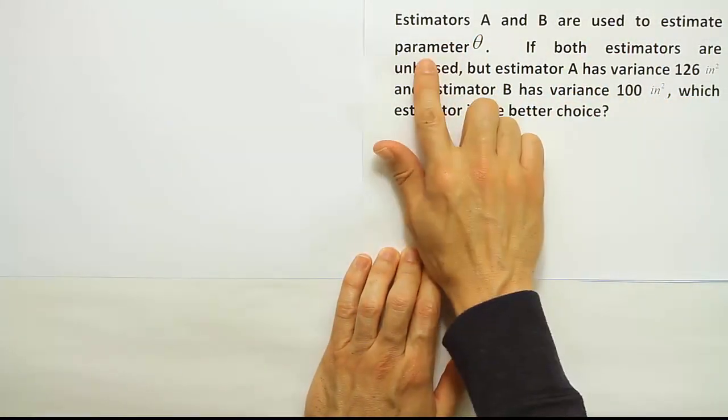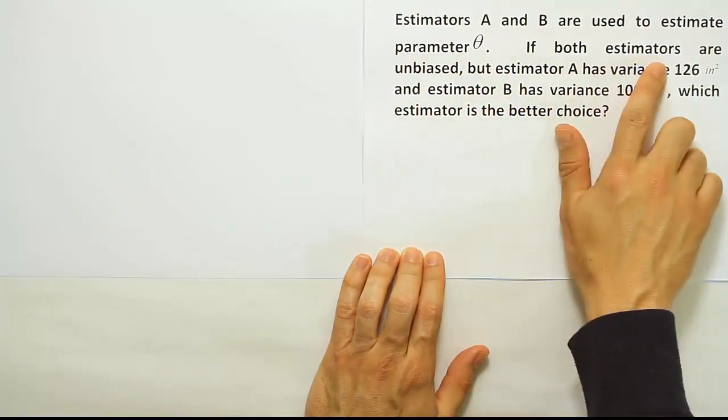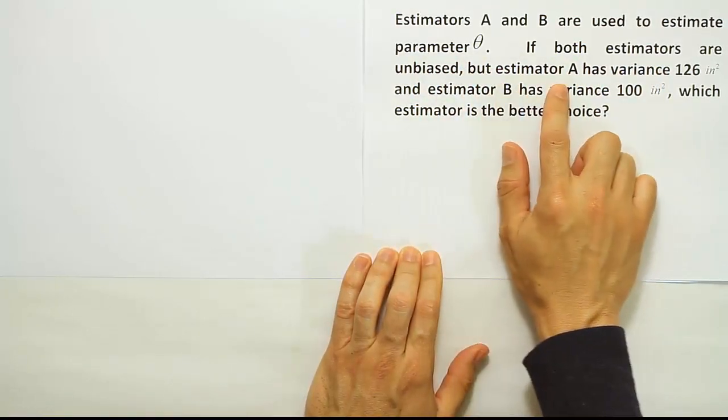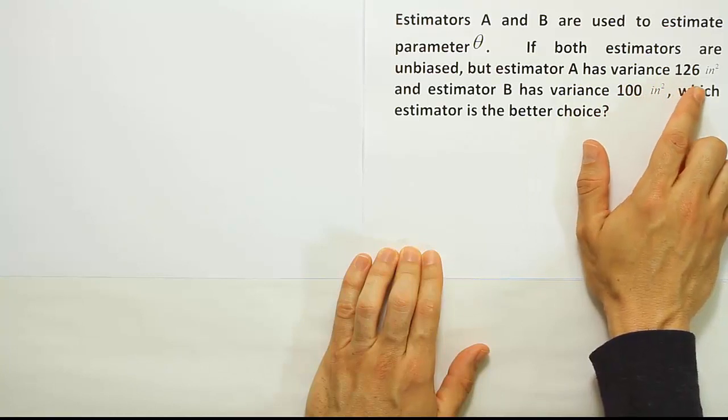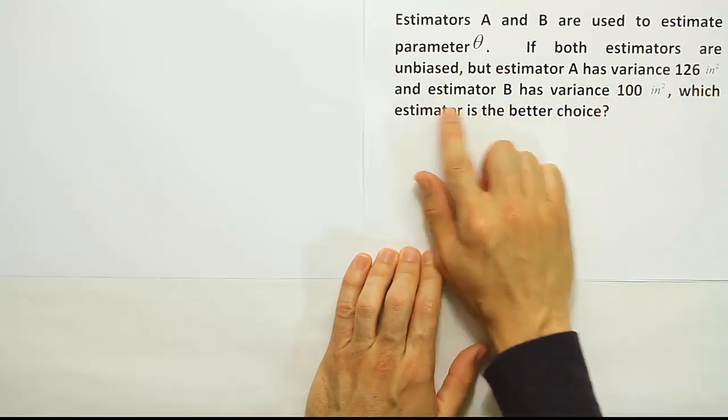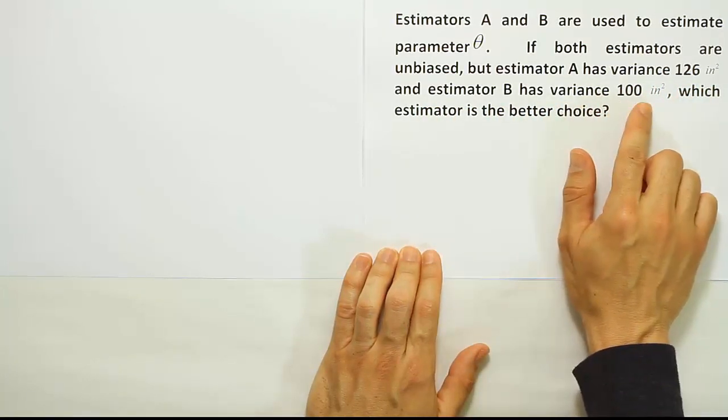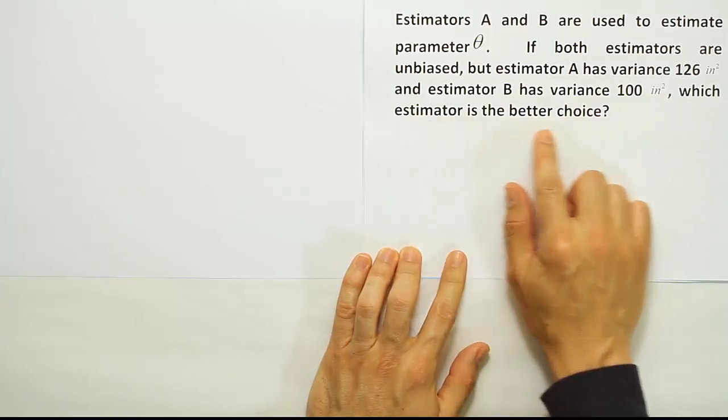Estimators A and B are used to estimate parameter theta. If both estimators are unbiased, but estimator A has variance 126 inches squared and estimator B has variance 100 inches squared, which estimator is the better choice?